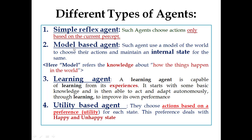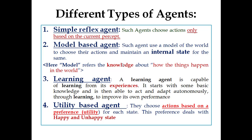Then the model based agent. Such agents use a model of the world to choose their actions and maintain an internal state for the same. What is a model? A model refers to knowledge about how things are happening in the world, so that it can maintain an internal state based on the current situations of the world. So model based agent has two important things: it maintains a model about how things are happening in the world, and an internal state.